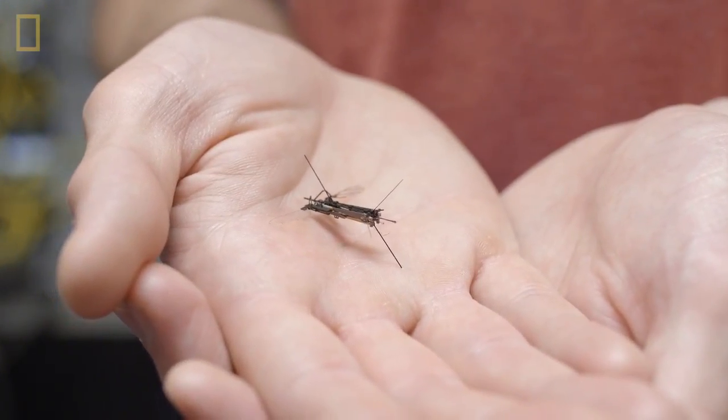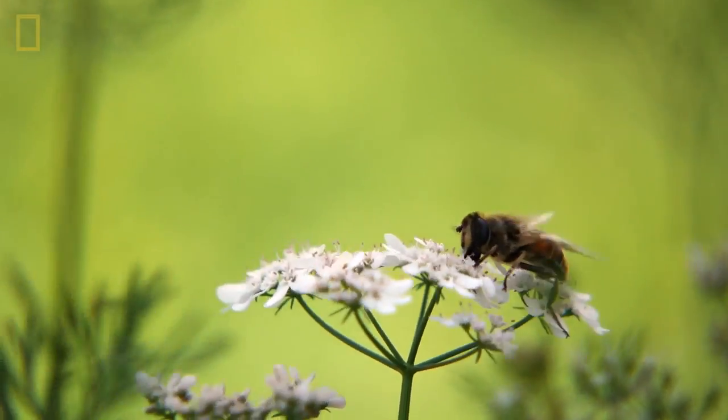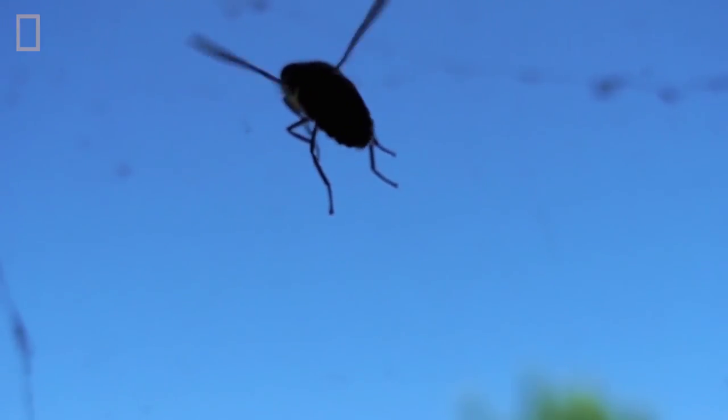Bees have four wings. Flies have two. Flies are arguably the most agile fliers on Earth. The agility that flies achieve, that's what we were targeting.